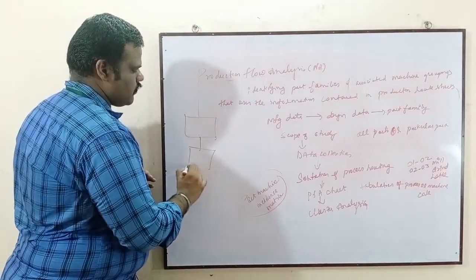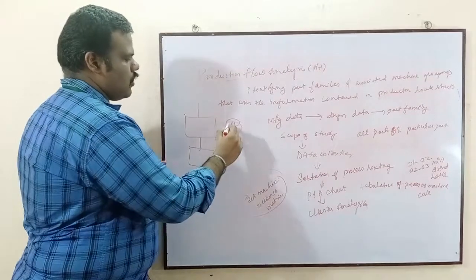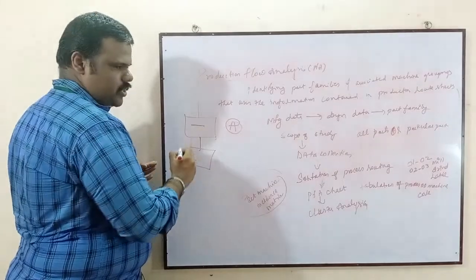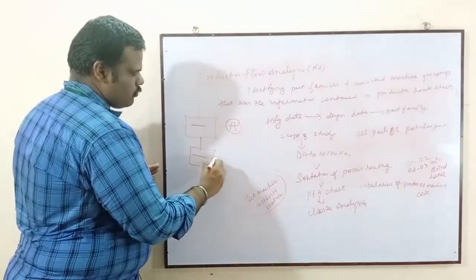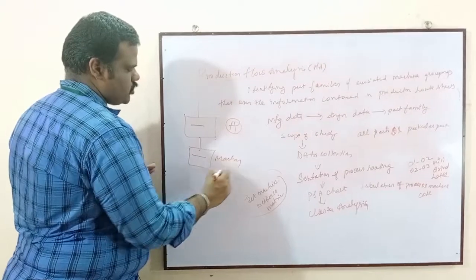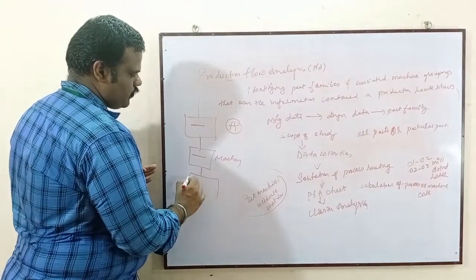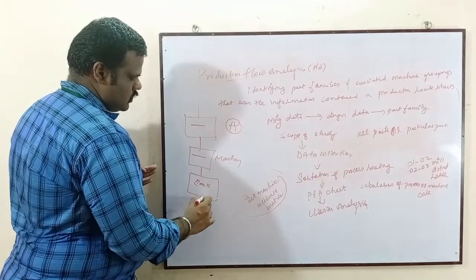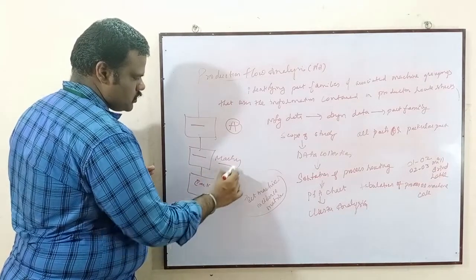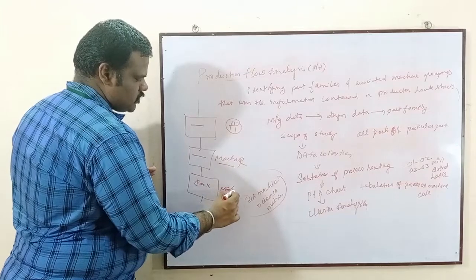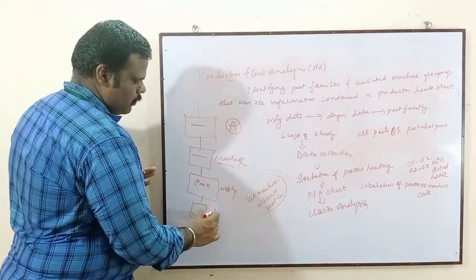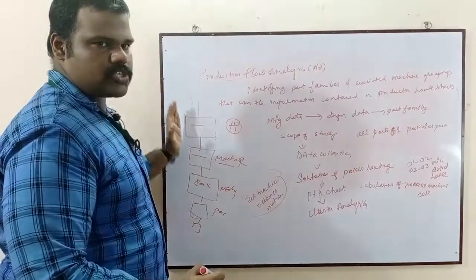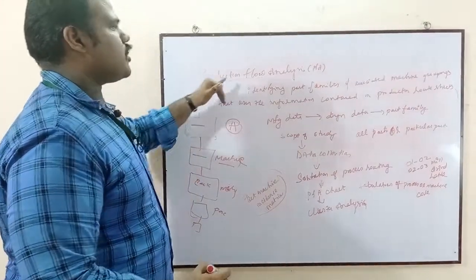For example, if a company is producing a product called A, first they will be using the data study — why the product is developed, second what machine they are using, third the packing methods, then machining process, then packing process, then dispatch. Likewise, they will be following a production flow. That is production flow analysis.